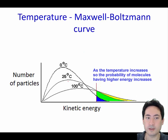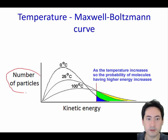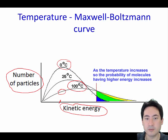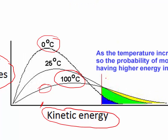The Maxwell-Boltzmann diagram is one you're expected to draw. Remember the axes: this is number of particles, and this is kinetic energy of the particles. At 0°C it looks like this curve. If you increase the temperature to 100°C, you still have some particles at 0 kinetic energy, but there are more particles with higher kinetic energy because the average kinetic energy has increased. If this is the activation energy line, at 100°C there will be more particles with enough energy to react than at 0°C, where only a small number have sufficient kinetic energy.